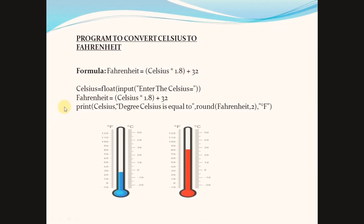Celsius is a variable holding a float input value — we need to enter a value while executing the program. The second line, Fahrenheit is a variable holding the value Celsius into 1.8 plus 32, where Celsius is the value we entered.